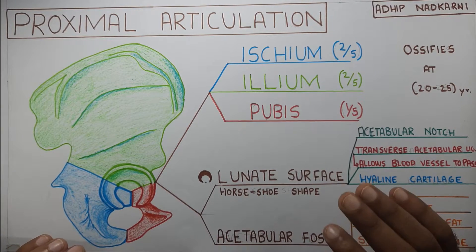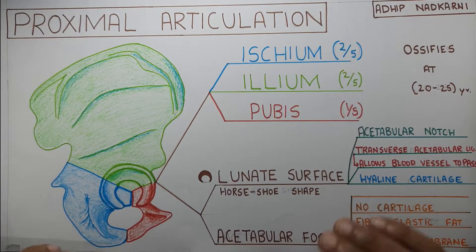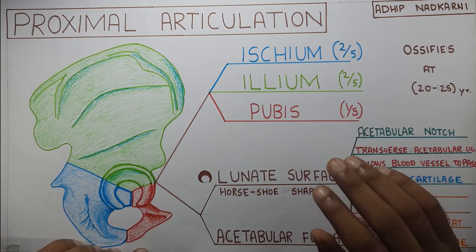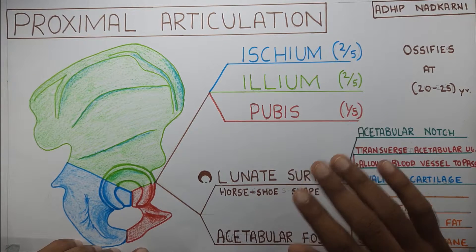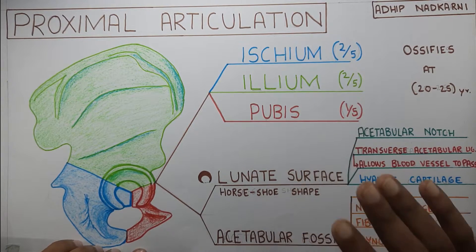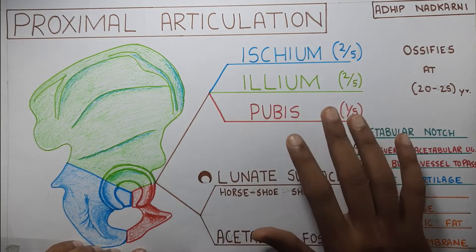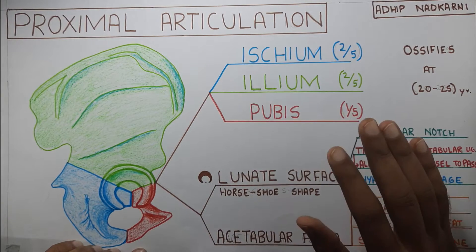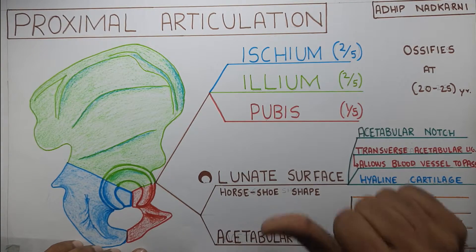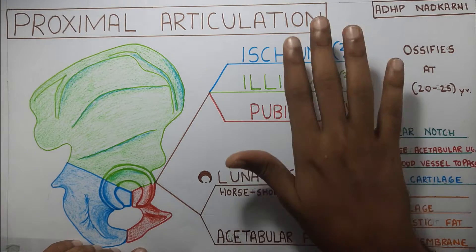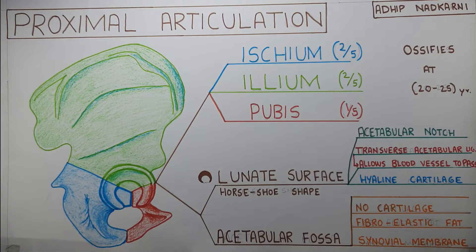Welcome to the first video of your hip joint complex. In this video, I will give you a brief introduction to the hip joint and we will talk about the proximal articulation of the hip joint. Then we will also cover the labrum and the angles that are formed in the proximal articulation. So let's start with the topic.